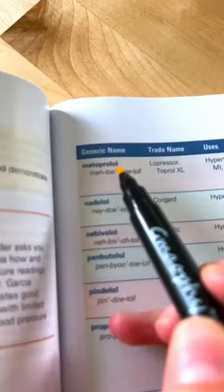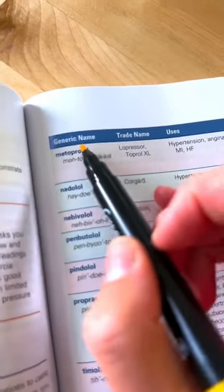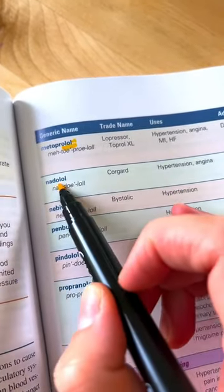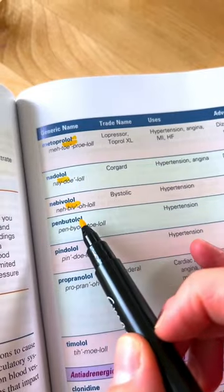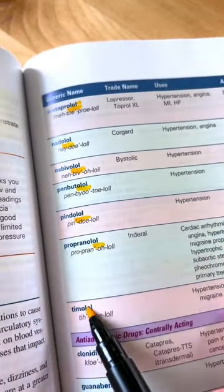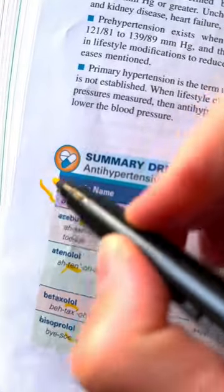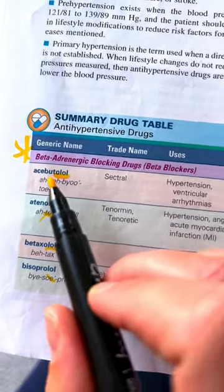Rather than remembering each individual medication, you're going to want to remember the suffix. So we have metropropanol, natolol, and several others — all ending in olol. This is for our beta blockers. So anytime you see the suffix olol, you know it's a beta blocker.